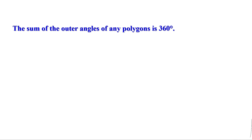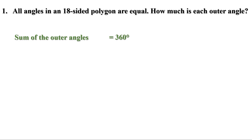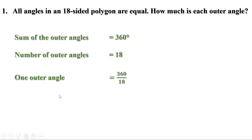Now let us do some problems. First problem: all angles in an 18-sided polygon are equal. How much is each outer angle? We know the sum of the outer angles of any polygon is 360 degrees. Here the number of sides is 18, so there are also 18 outer angles. Each outer angle = 360 ÷ 18 = 20 degrees.